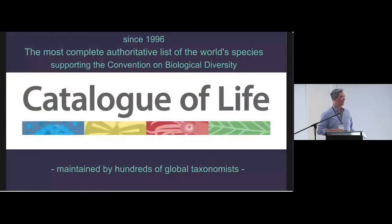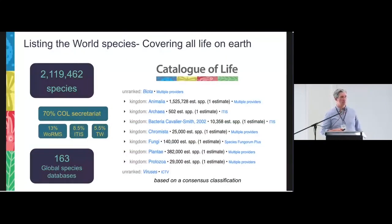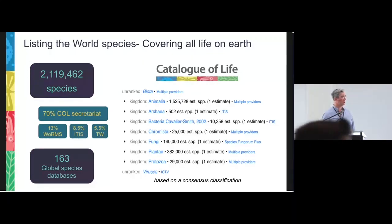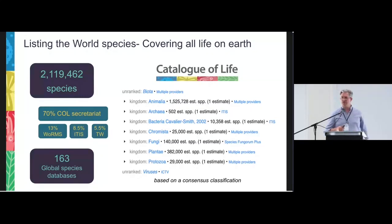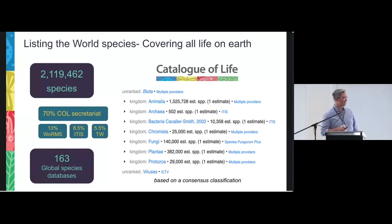The Catalogue of Life has been around for quite some time, with the aim to build a species list of all described species of all life. Right now we have reached well above 2 million accepted species. There is a large community behind that of more than 500 experts worldwide. We are making use of 163 databases at the moment to construct the global list. Most of the data is handled by the Catalogue of Life Secretariat — doing all the data conversions, making sure the pipelines are there. But there are also other initiatives like TaxonWorks, WoRMS, AVIA, and ITIS that really play an important role in getting data up to the Catalogue of Life. It's a consensus classification.